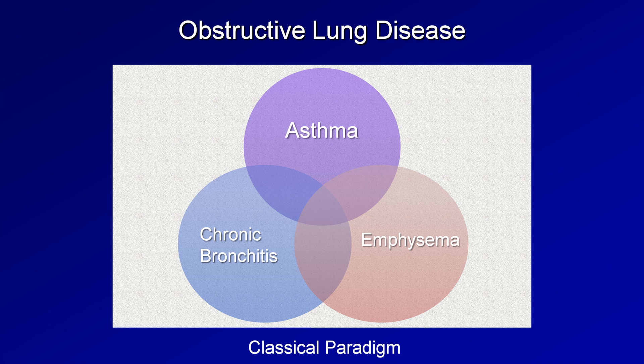As the diagram suggests, these three conditions — asthma, chronic bronchitis, and emphysema — are not mutually exclusive. Some patients have both emphysema and chronic bronchitis, some have asthma and emphysema, and so on. Unfortunately, despite the frequency with which this diagram has been reproduced over the years, it's not a particularly accurate or helpful representation.